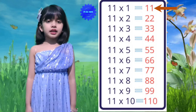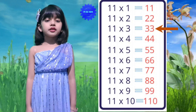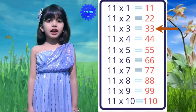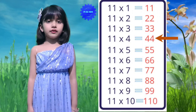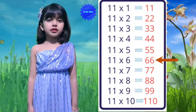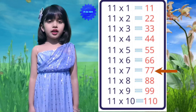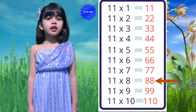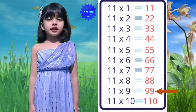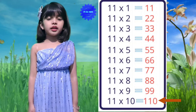Table of 11: 11 ones are 11, 11 twos are 22, 11 threes are 33, 11 fours are 44, 11 fives are 55, 11 sixes are 66, 11 sevens are 77, 11 eights are 88, 11 nines are 99, 11 tens are 110.